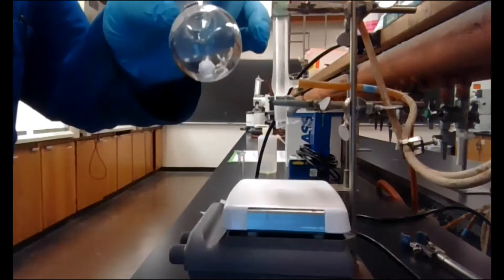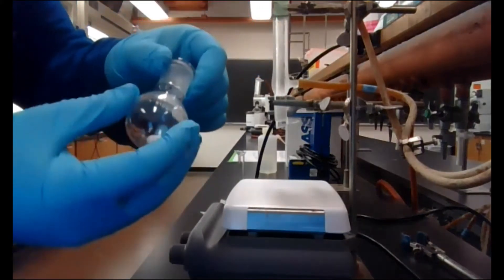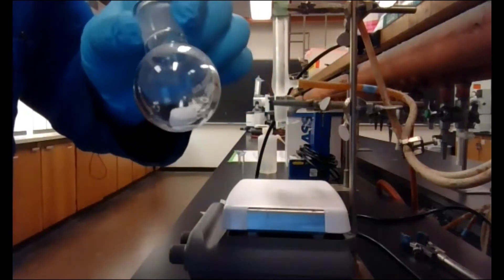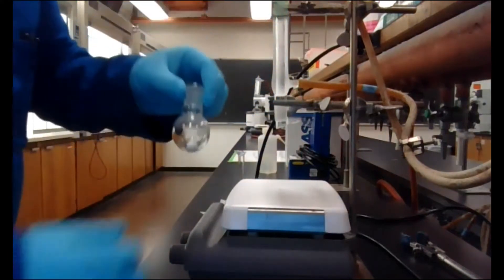I've already added in 150 milligrams of the NEM. It started out as a clear colorless crystal, but it melts at room temperature, so as soon as I added it to the round bottom, it melted, and then there's a stir bar in there.